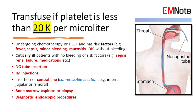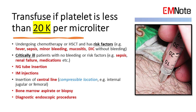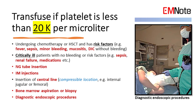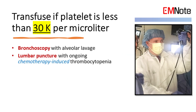Still at the below 20,000 threshold: for inserting nasogastric tubes, giving intramuscular injections, and inserting central lines in compressible locations like the internal jugular or femoral vein; for bone marrow aspiration or biopsy; and for diagnostic endoscopic procedures. Transfuse if platelet count is below 30,000 per microliter.